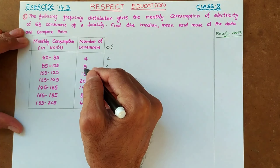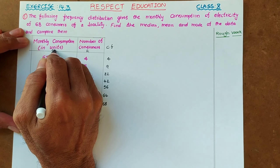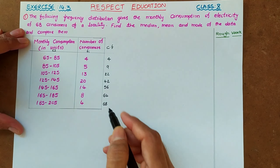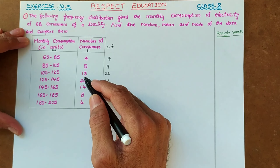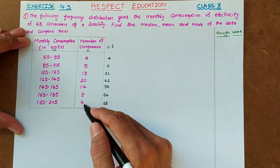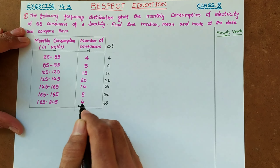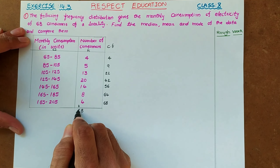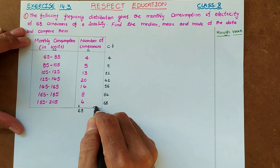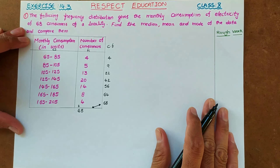Now let us add the frequencies. This is frequency f, and this is class interval ci. Adding them: 4, 4 plus 5 is 9, 9 plus 3 is 12, 12 plus 4 is 16, 16 plus 4 is 20, 20 plus 8 is 28 — carry 2 — 2 plus 1 is 3, 3 plus 2 is 5, 5 plus 1 is 6. When these two totals are equal, it indicates our addition is correct.